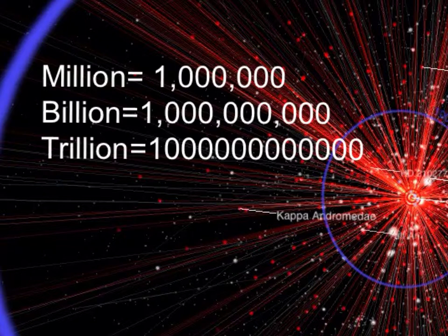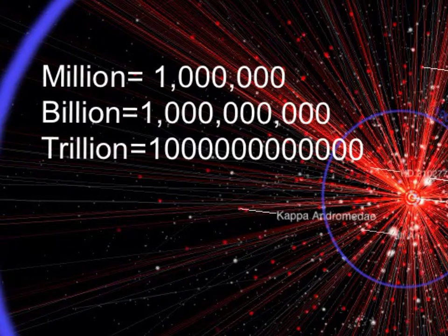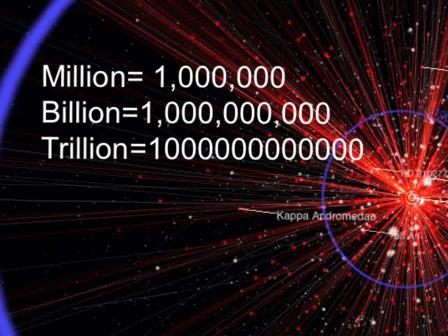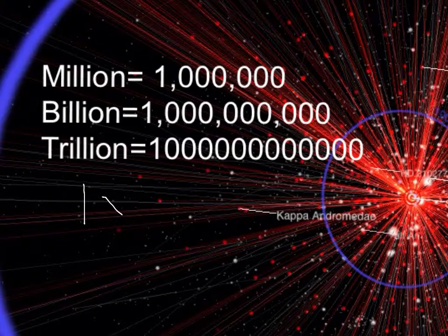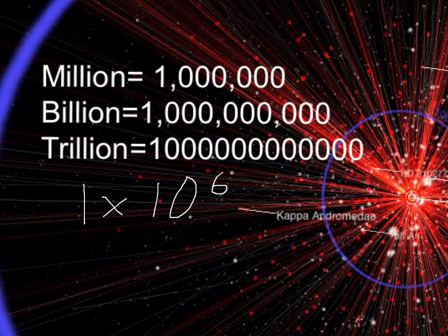First, let's start by reviewing some numbers that you're pretty familiar with already: millions, billions, and trillions. A million is one with six zeros behind it. A billion is one with nine zeros behind it. And a trillion has 12 zeros behind it. Whenever we write these, a million is one times ten to the sixth. Ten to the sixth would be six places or six zeros.